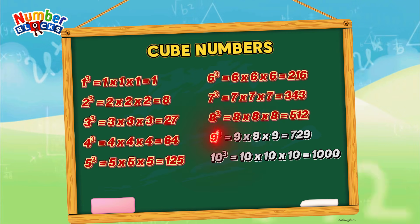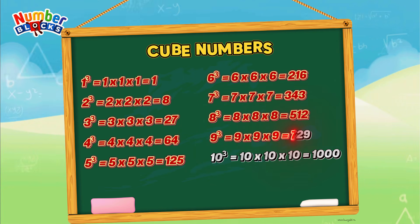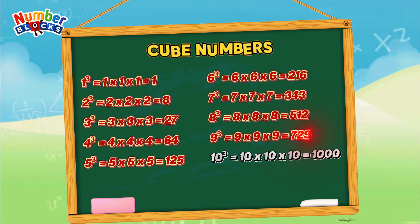9 cube, or 9 times 9 times 9, equals 729.